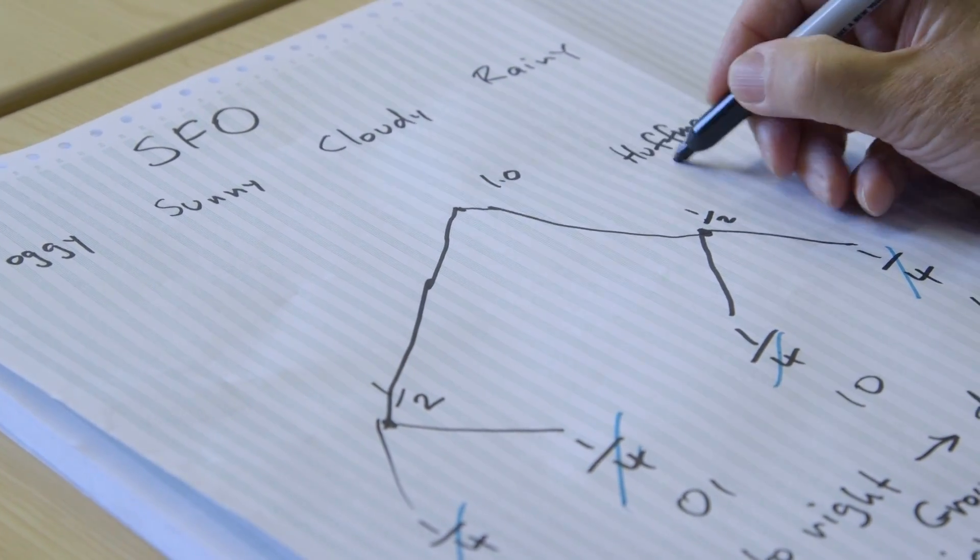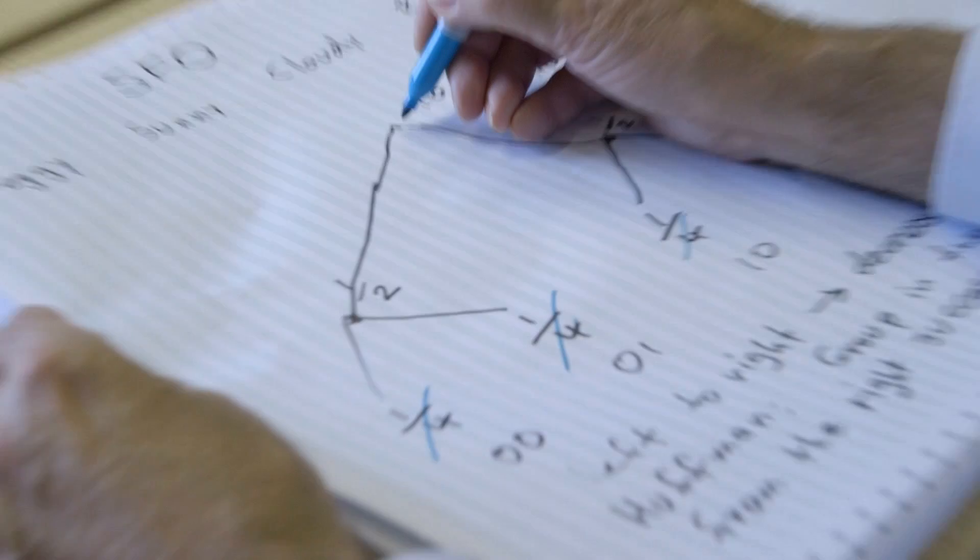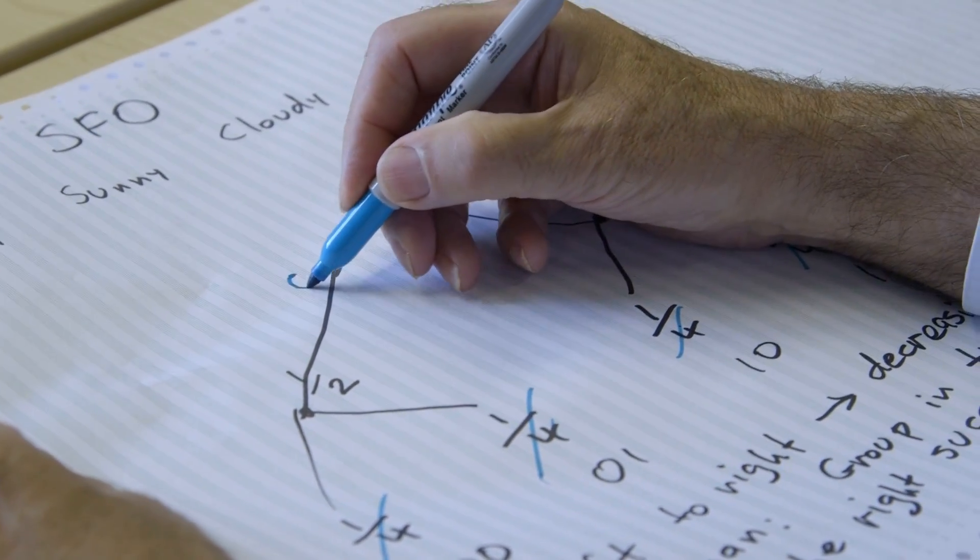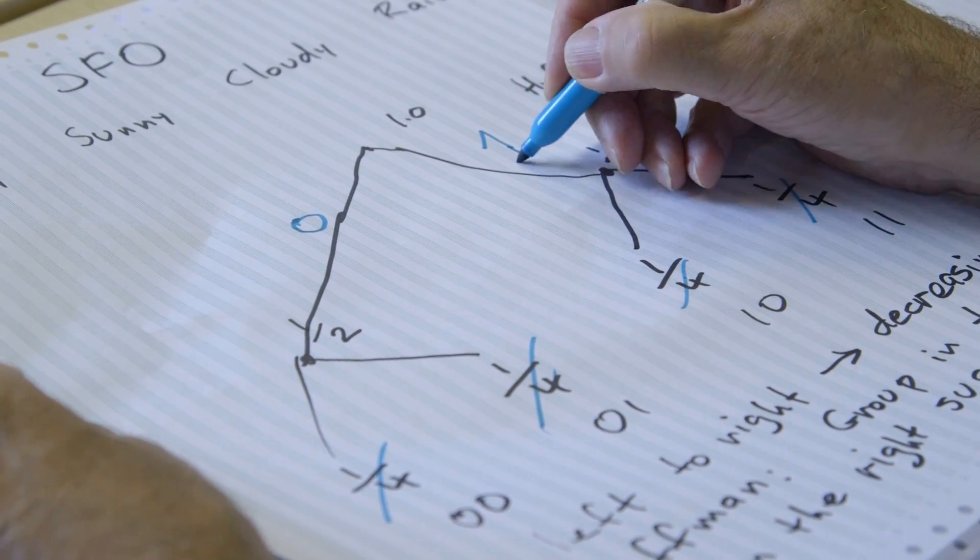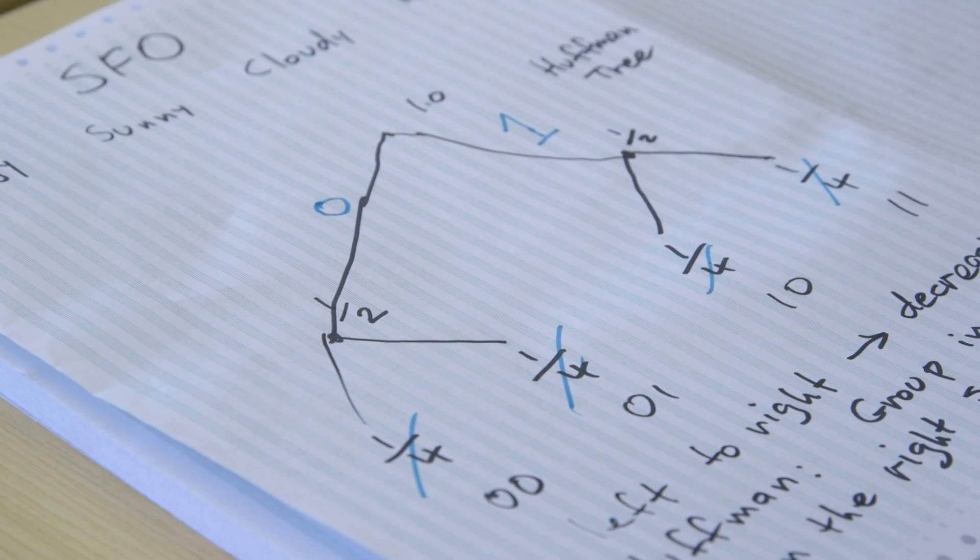The next thing you do, this is great fun, is to decorate the tree. I now want to, from this, work out what the correct code, the minimal code, should be for a given state. Starting at the root of the tree, I always annotate the left-going branch with a 0 and the right-going branch with a 1. You can do it the other way around, uniformly throughout, if you want to. It will come to a slightly different-looking Huffman code, but it will have just the same properties as the one I'm going to derive.